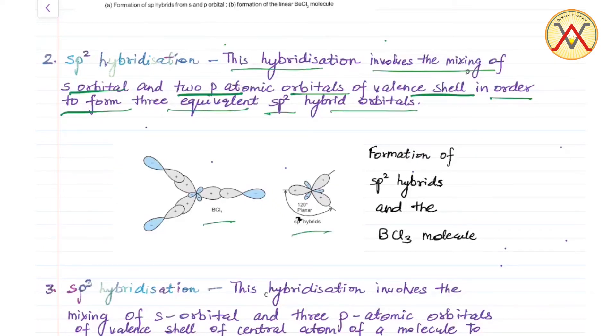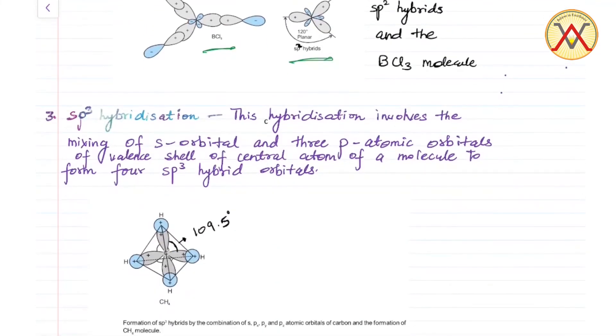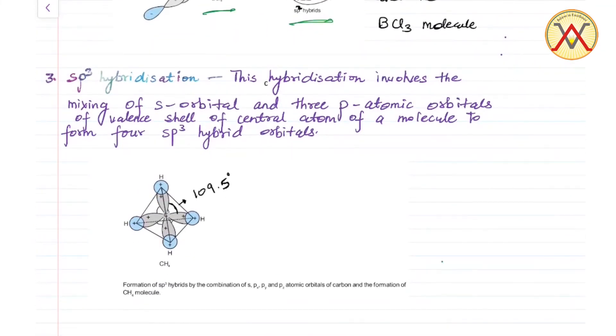Each hybrid orbital in sp2 hybridization has 33.3% s character and 66.7% p character. The geometry is trigonal planar.